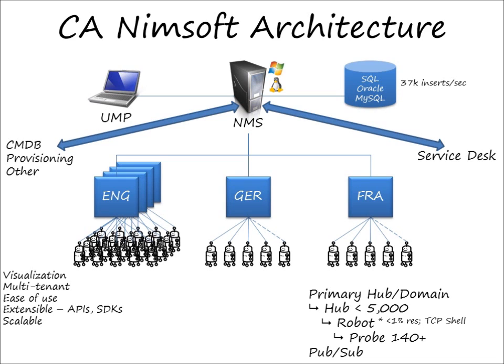Scalability revolves around proprietary NIMSOFT bus technology, which scales up to 37,000 inserts per second into the database. High availability is built-in. For example, if connectivity to Germany is lost, the hubs between Germany and France can still communicate. The Germany hub can send its data to the primary hub through the France hub without losing any data. This is accomplished through spooling — robots and hubs spool data in a store-and-forward fashion, and when connectivity is restored, they forward it on.